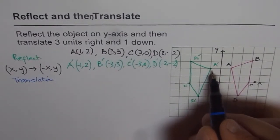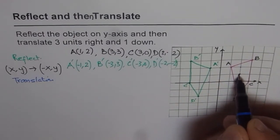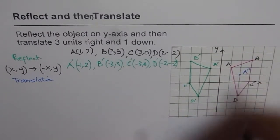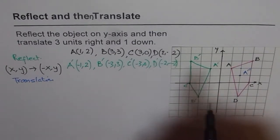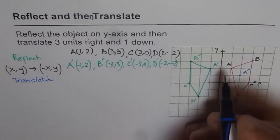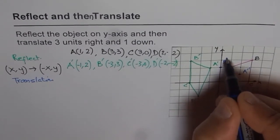So let's start with A dash and go three units right and one down. So A dash will come here. Let me write this point as A double dash. Similarly, B dash, three right and one down. So B dash will come here and we will call this as B double dash. That is the second transformation which we are doing.